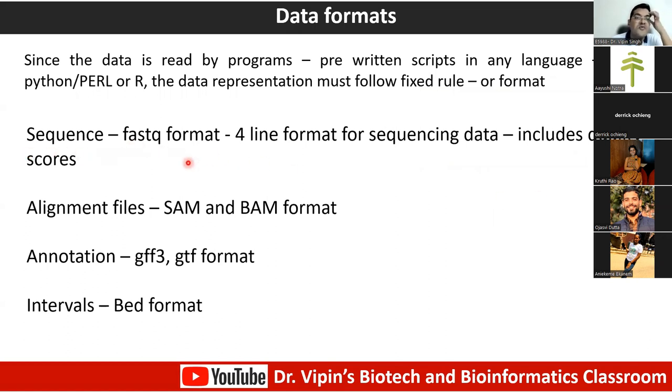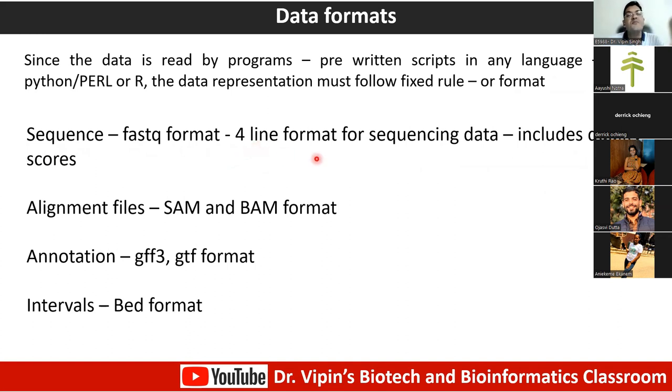Because sequencing data is high-throughput, manual analysis is not possible. NGS data analysis involves many file formats. The most common is the FASTQ format — a four-line format per sequence that includes the identifier line, sequence line, and quality scores.